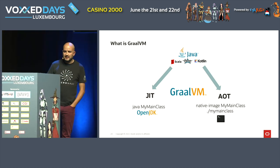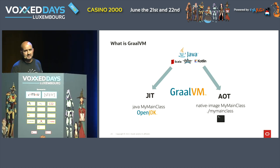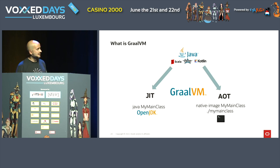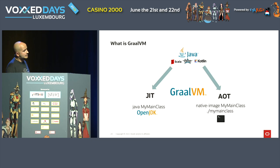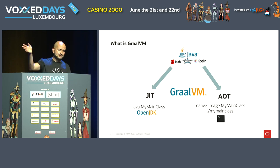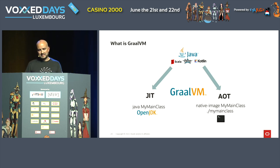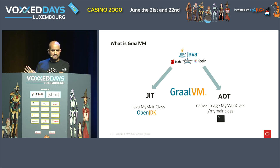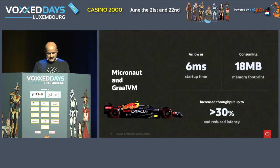One path is to use GraalVM as a JDK — it just works, and benchmarks indicate it can be faster than OpenJDK in certain conditions. The other path is to produce a native image of a Java application. They start from the main class and traverse all code paths of your application to produce a self-contained binary that works only on the operating system where it was built. So if you're on Linux and you generate a native image, it will be a native image for Linux only.